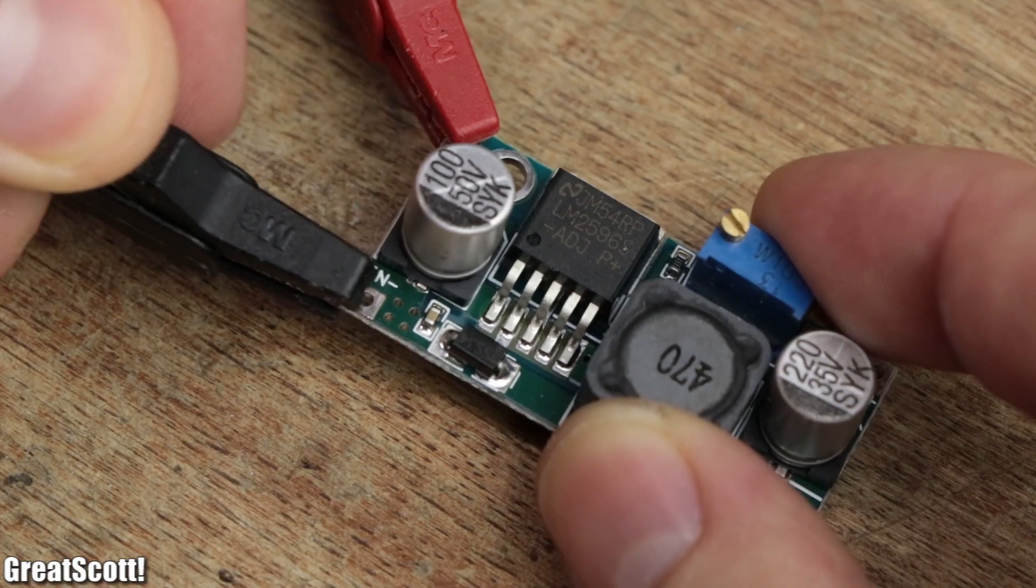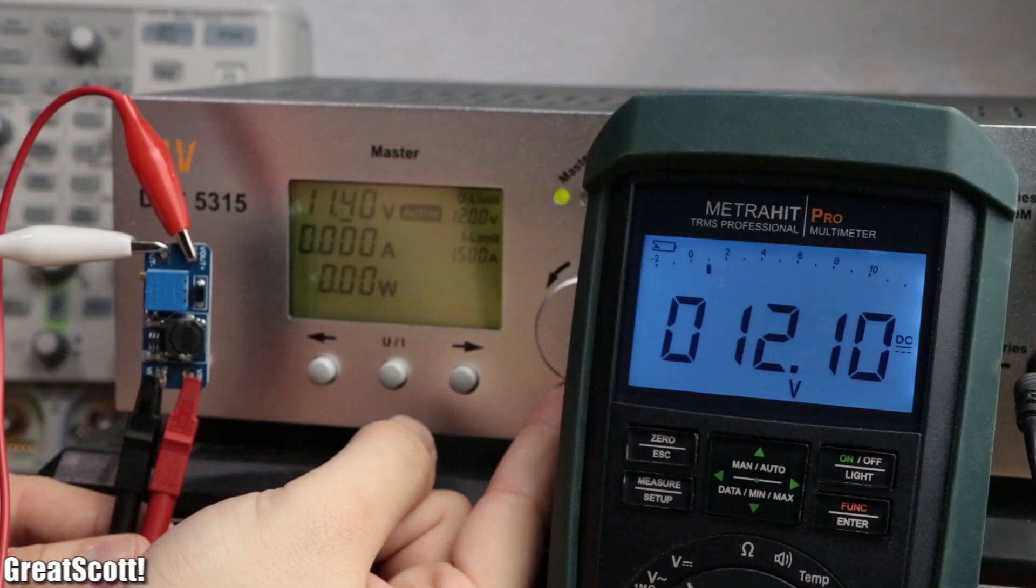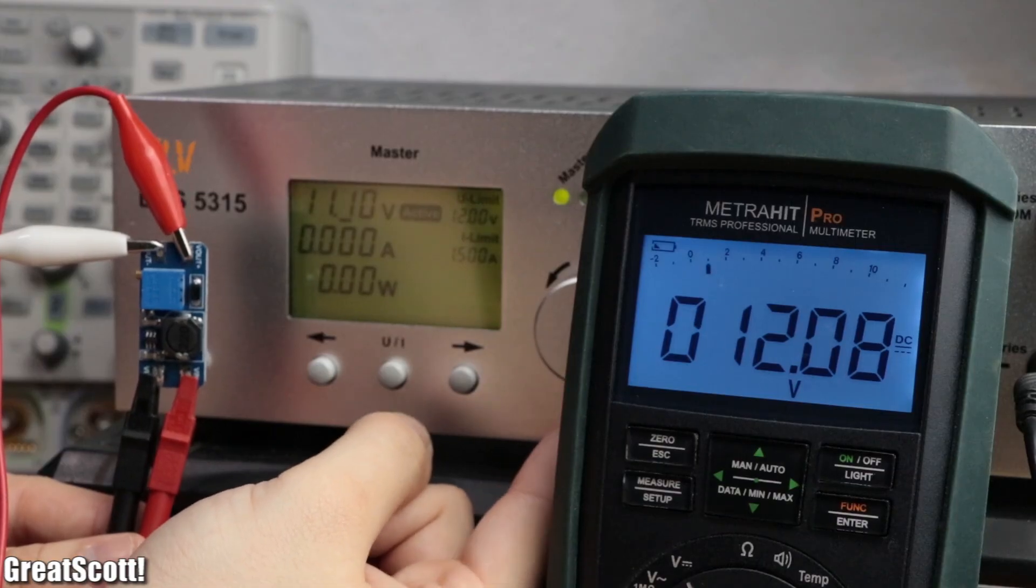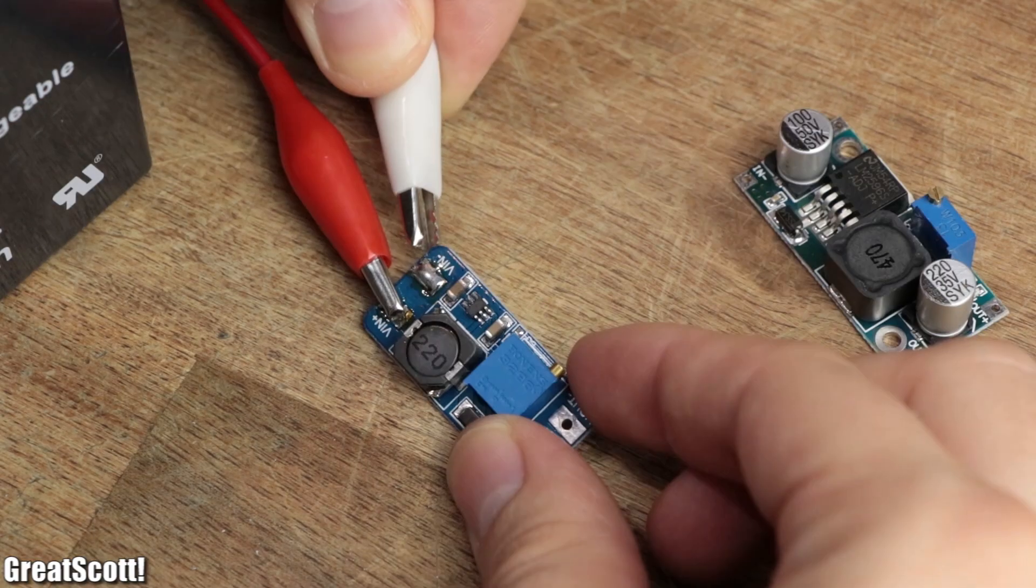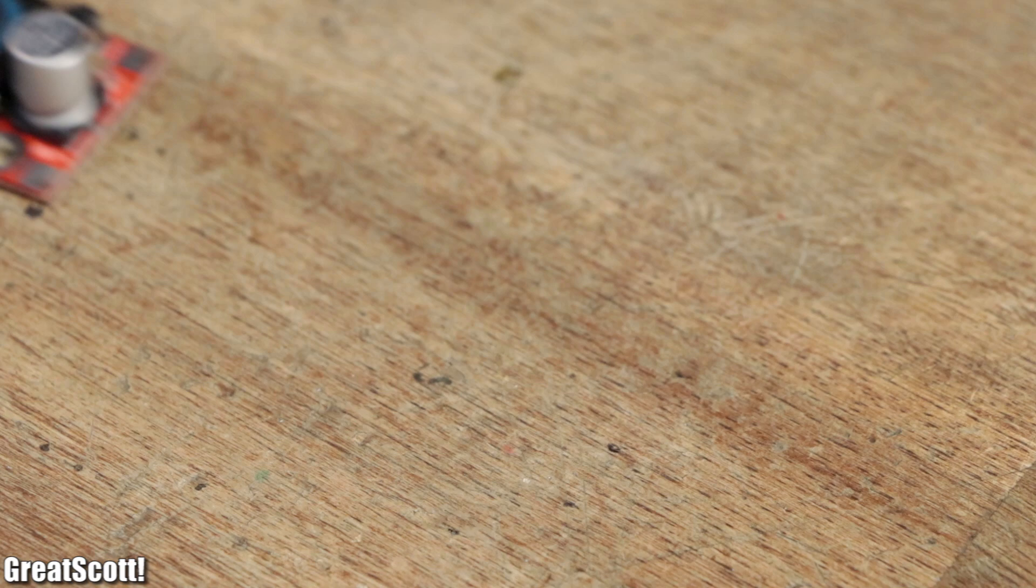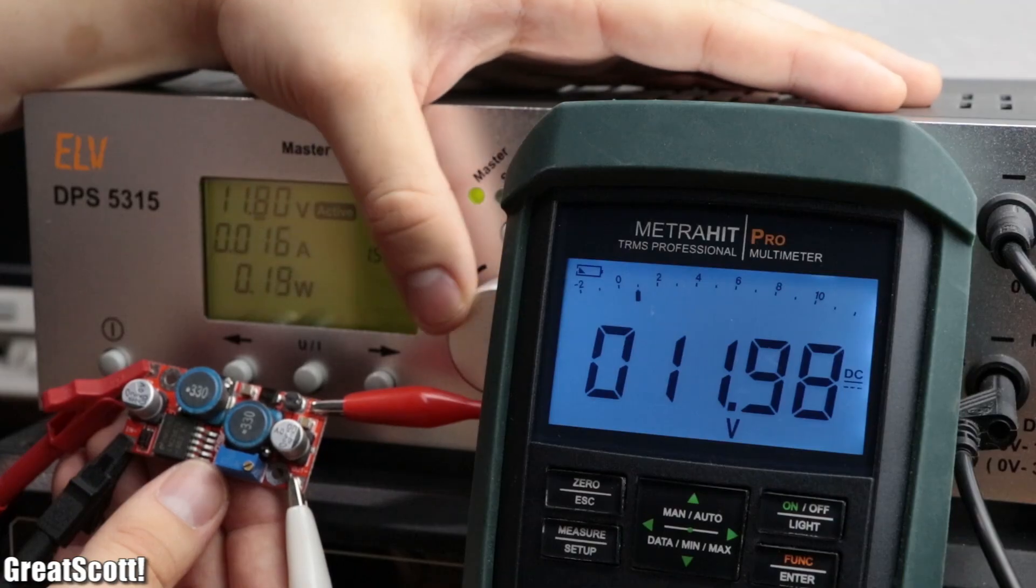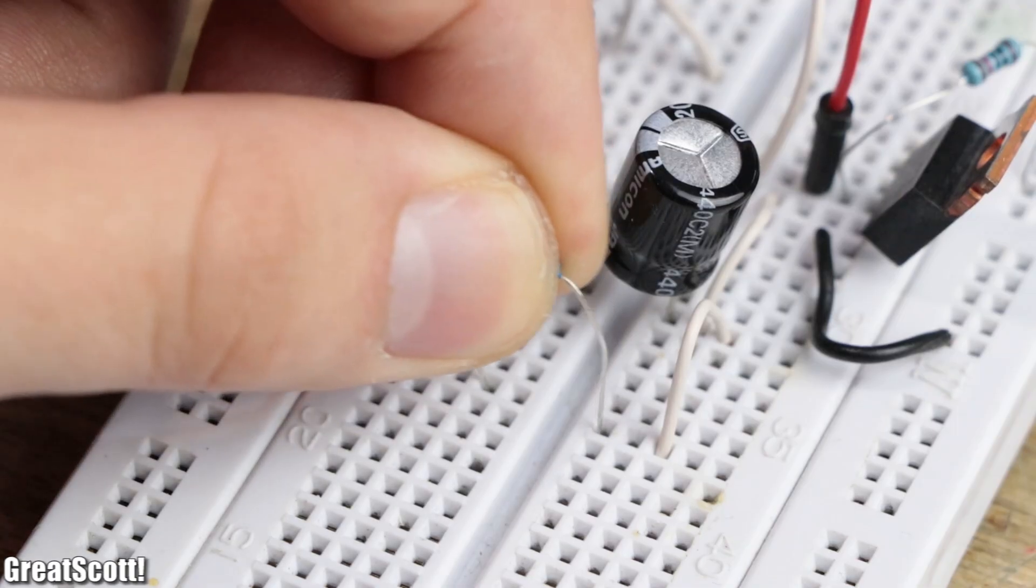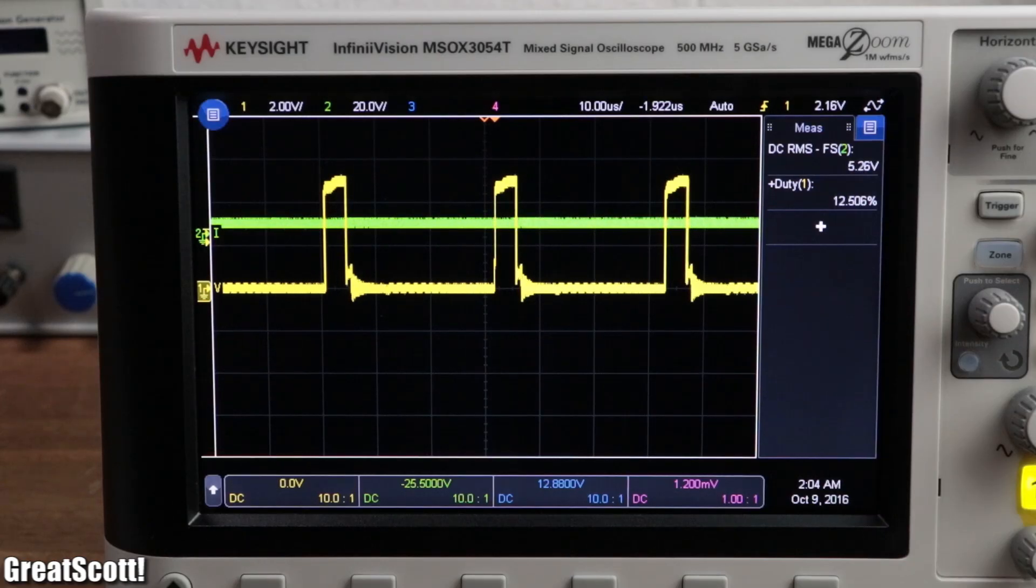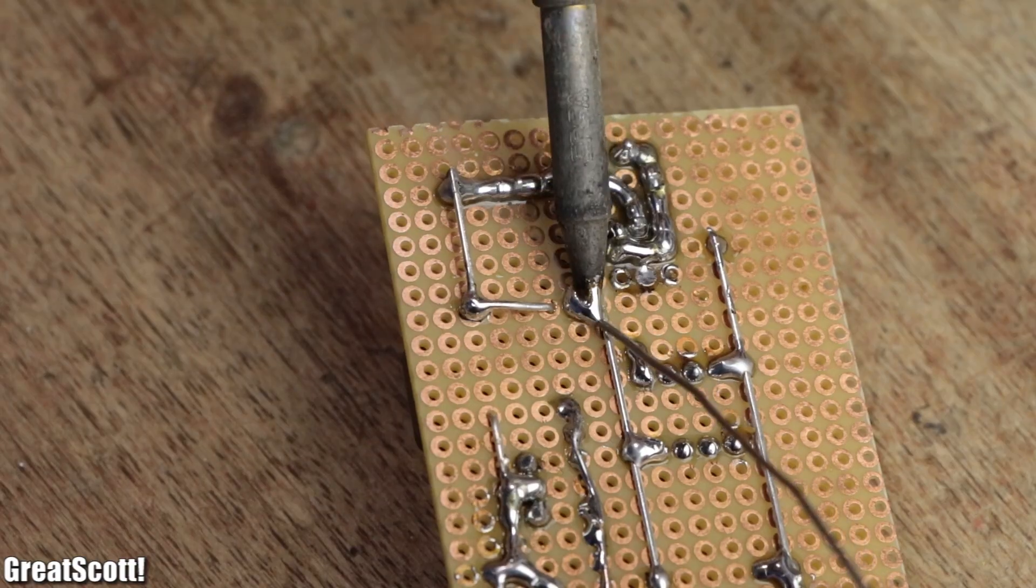We could use a buck converter to step down the voltage above 12 volts and a boost converter to step up the voltage below 12 volts, but working with two circuits like this is rather impractical. The solution is a buck-boost converter, which can step up and step down DC voltage in a fluent manner. In this video, I will show you how such a circuit works and how you can easily build one yourself. Let's get started.